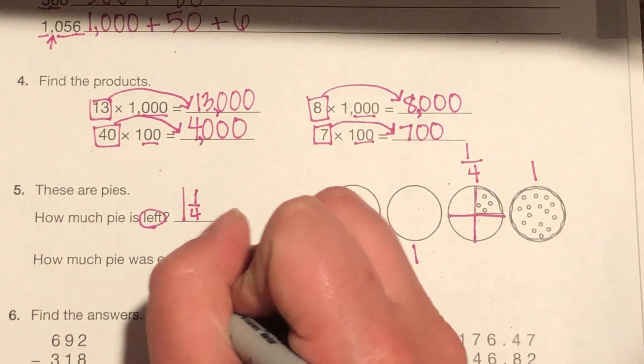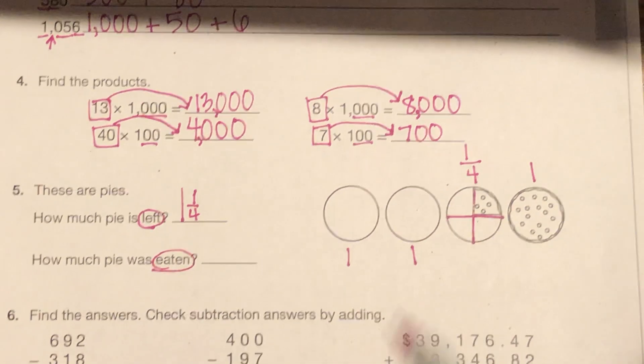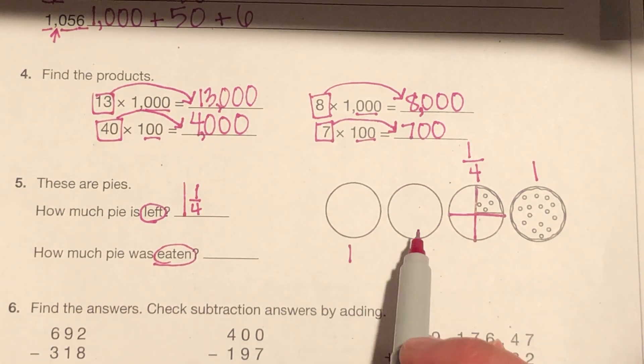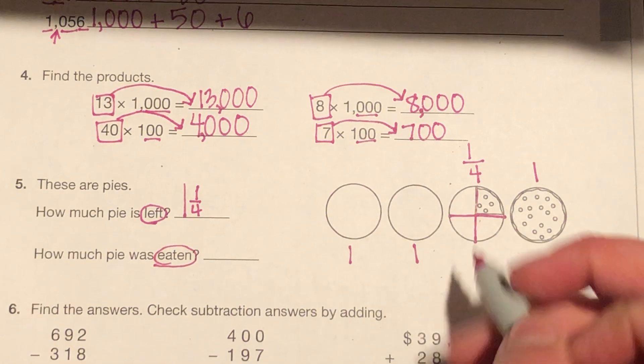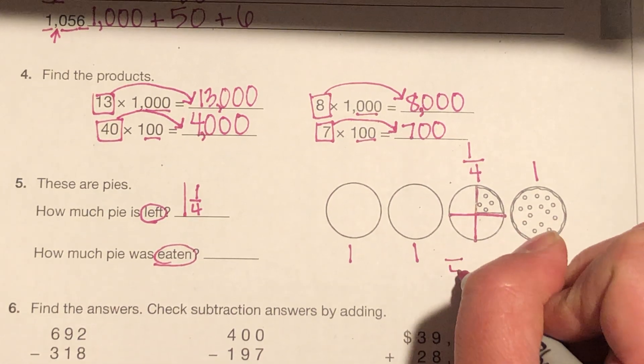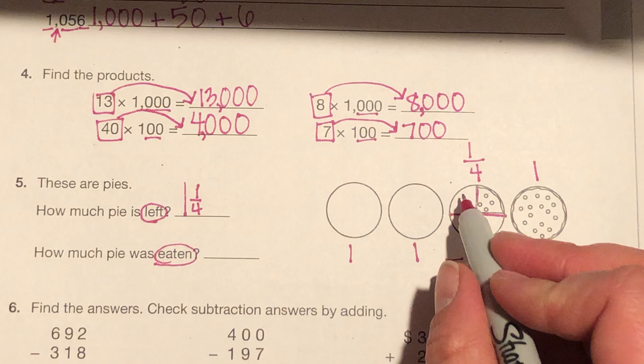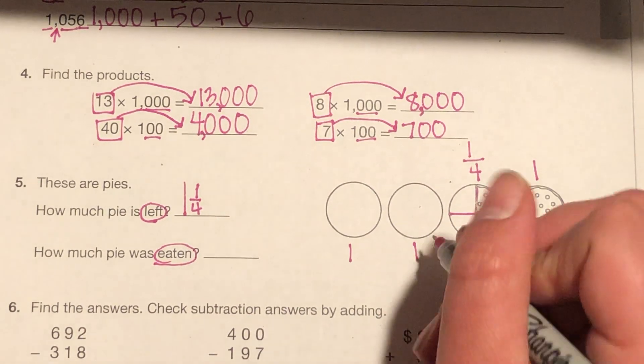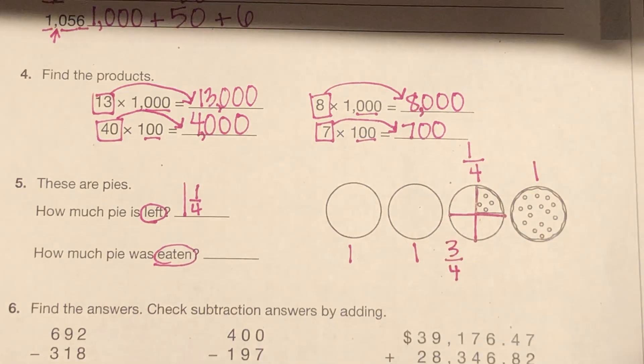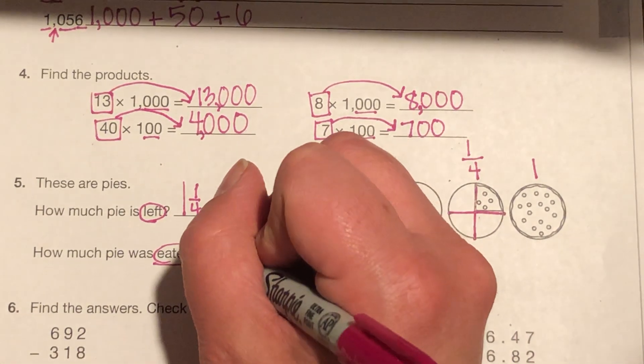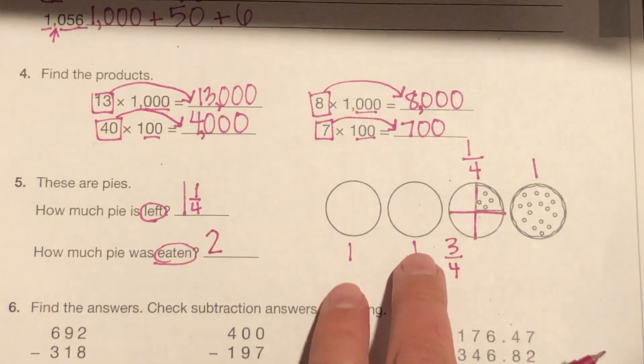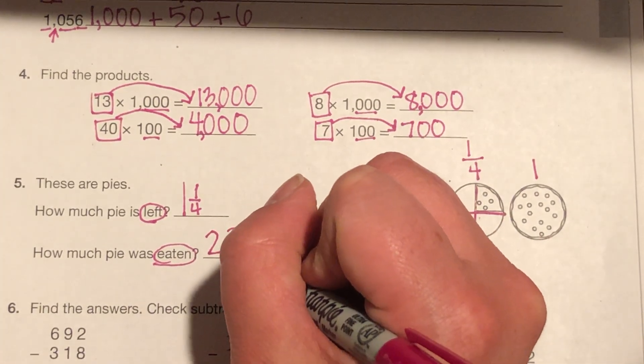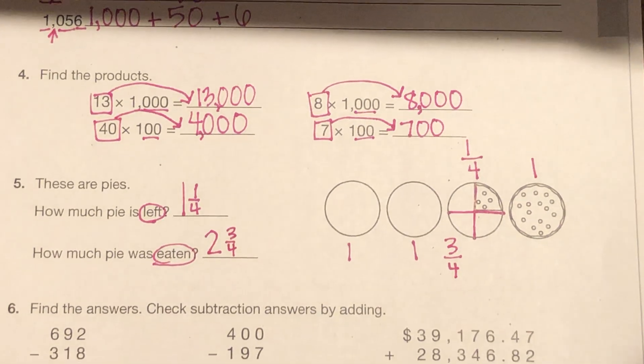How much pie was eaten? That's going to be the white spaces. So happy I checked that. So, I have two holes and then my fractional value, once again, is going to be out of four. But how many empty pieces do I have? How many pieces are gone? That's three-fourths. So, what got eaten was two holes and three-fourths. So, two and three-fourths.